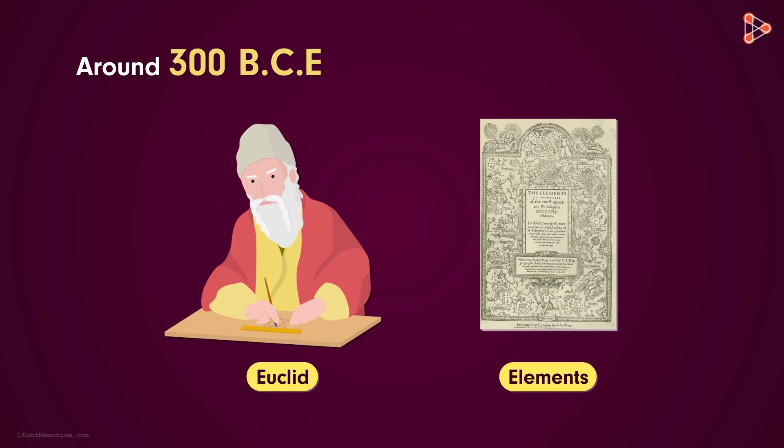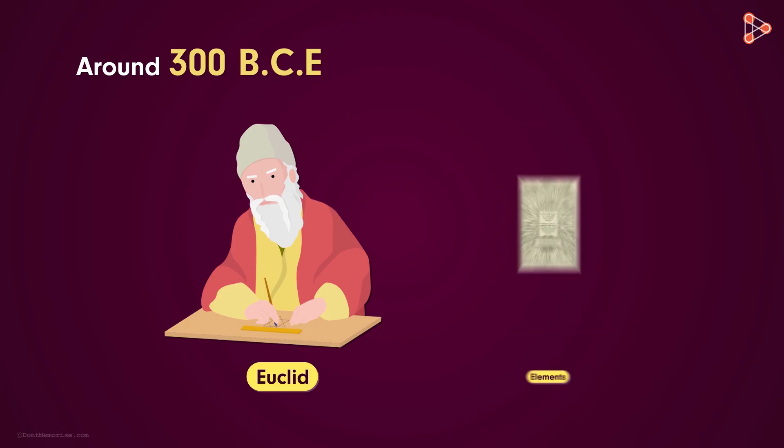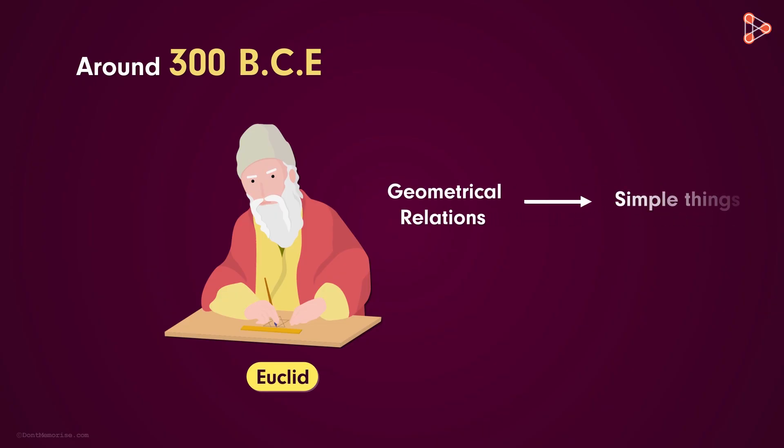One interesting thing Euclid did was that he set out to prove that the geometrical relations known at that time follows logically from some simple things we know intuitively to be true. Euclid showed that the knowledge of geometry can be proven by just assuming some things to be true.